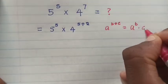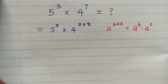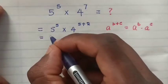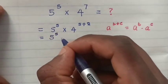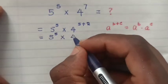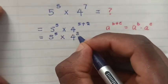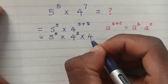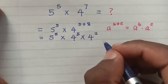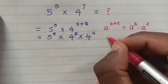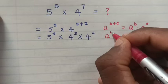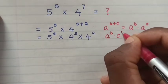Again, from the formula a^(b+c) = a^b × a^c, so here it will be 4^(5+2) is the same as 4^5 × 4^2.